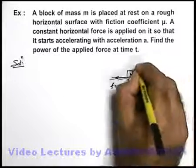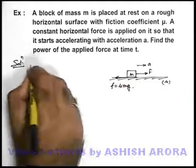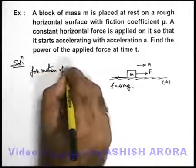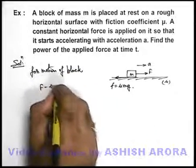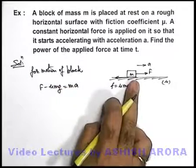It is also given that the block is accelerating with an acceleration a. So we can write for motion of block: F minus mu mg equals ma. This is the equation of motion for the block.